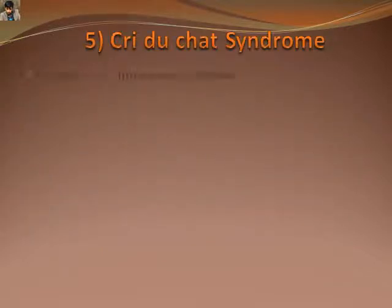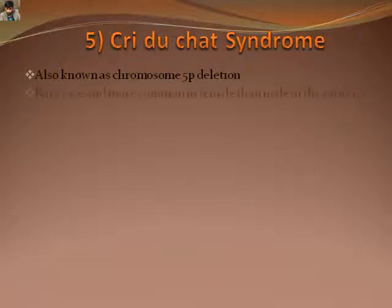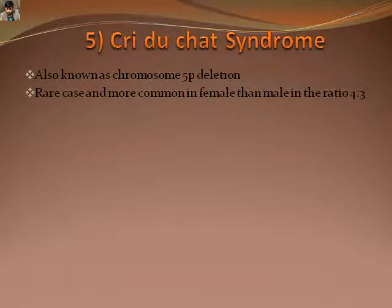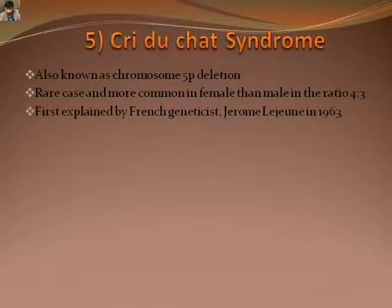Cri-du-chat syndrome is also known as chromosome 5p deletion. It is more common in females than in males. Some observed disorders include a cry like that of a kitten, difficulty in swallowing, aggression, small head and jaw, and skin tags.